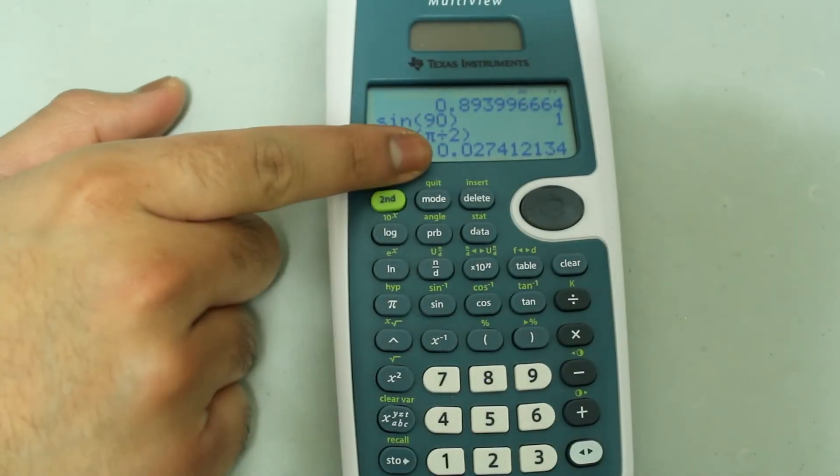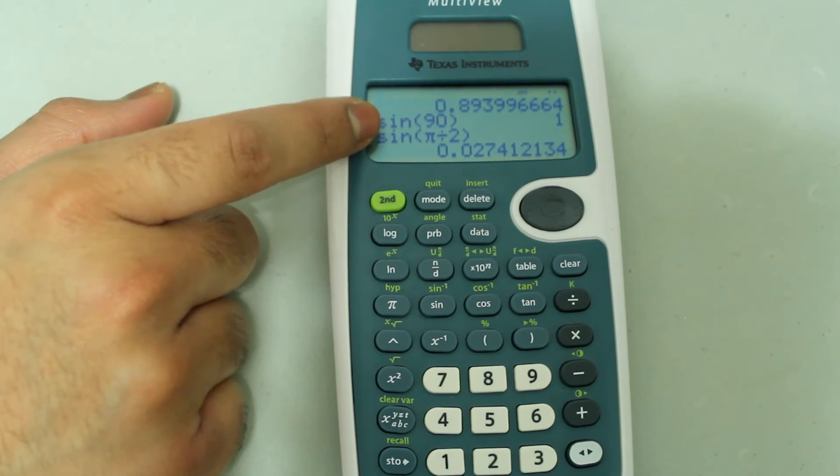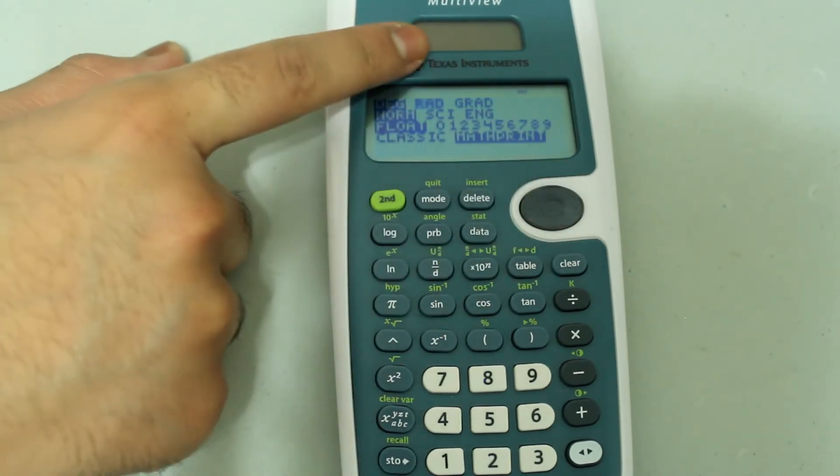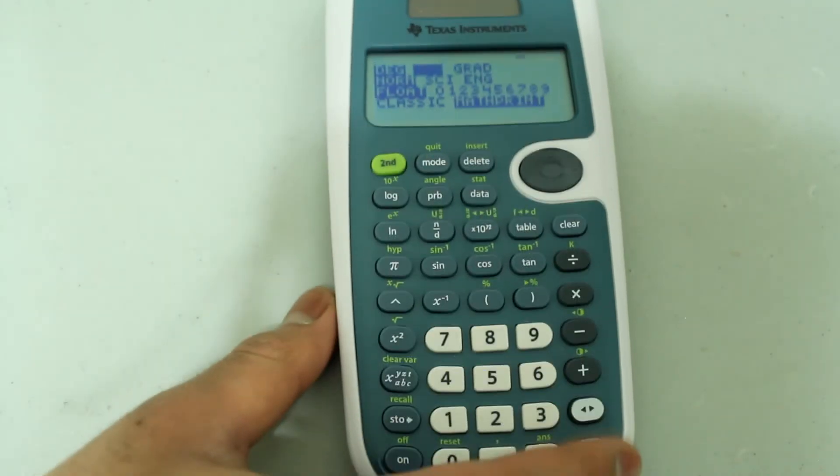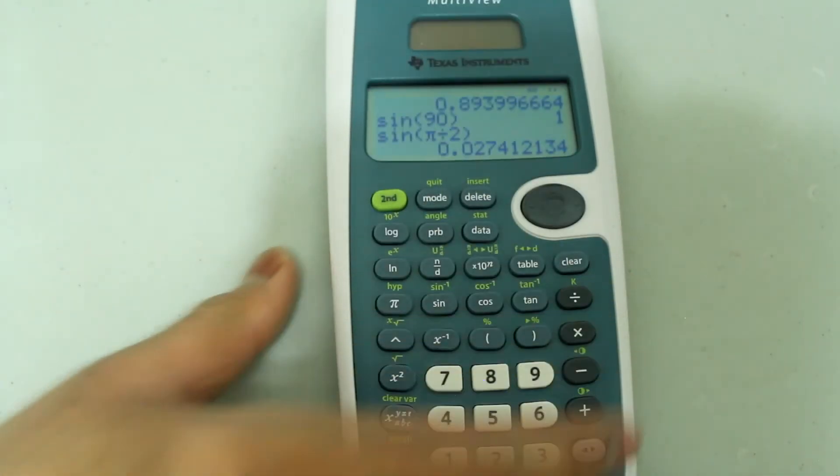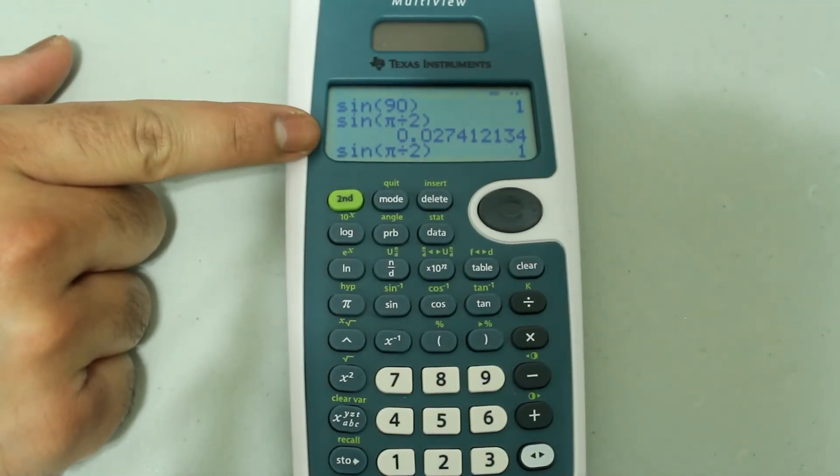But that's not right. So if I go to mode and shift it back to radians and press enter, and then press second mode to quit, and press enter again. And now I get the correct answer as 1.